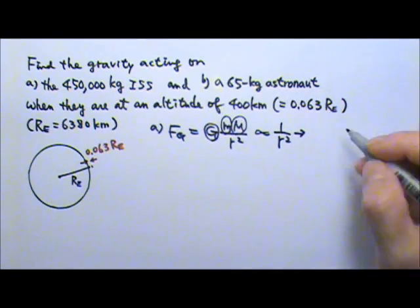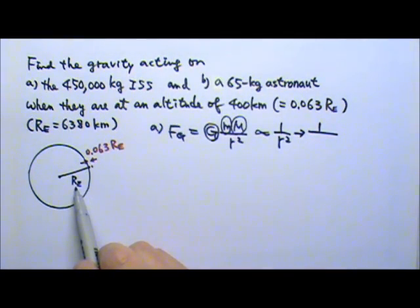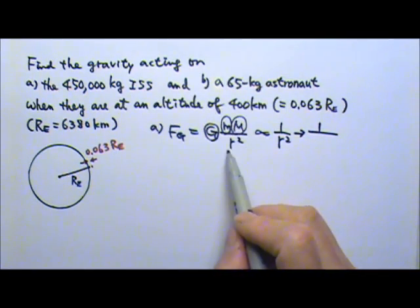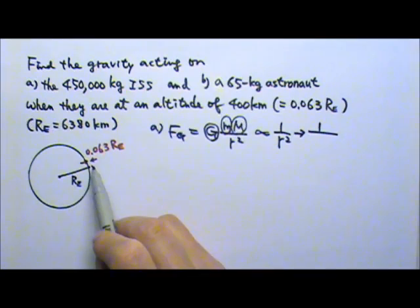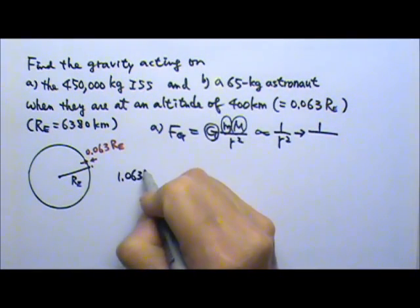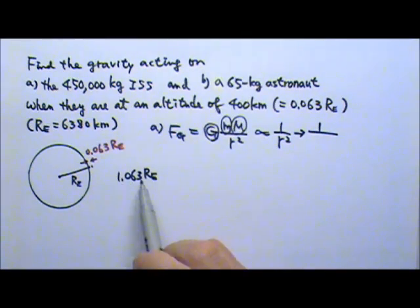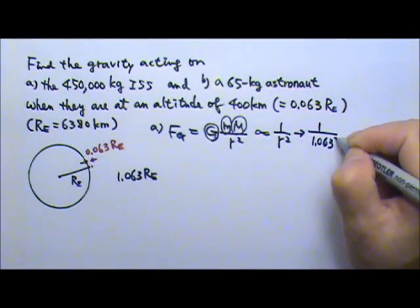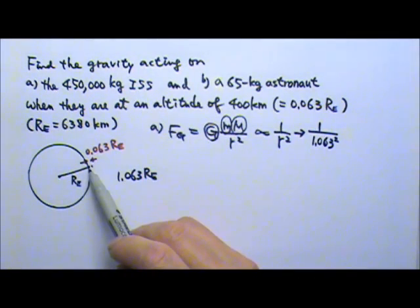By what factor does r change? On the surface, the distance to the center of the Earth is 1 Earth radius. At the altitude of 400 km, the distance is not just 0.063 R_e — it is 0.063 plus 1 R_e, because we measure all the way to the center of the planet. So the distance is 1.063 R_e. This means r has changed by a factor of 1.063, and we have to square it. This is the factor by which the gravitational force changes.